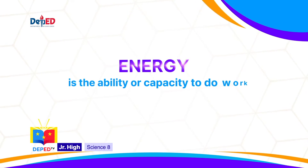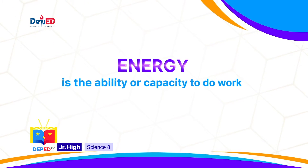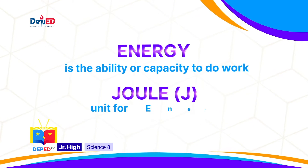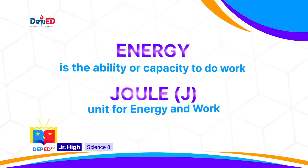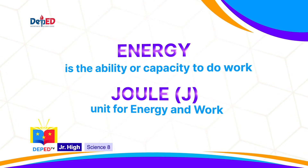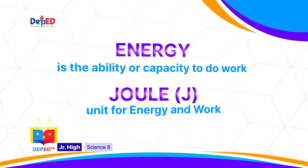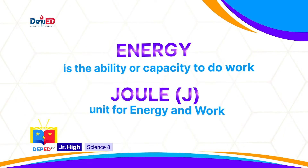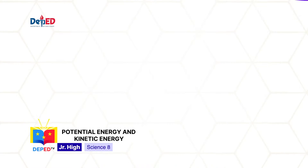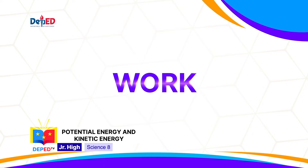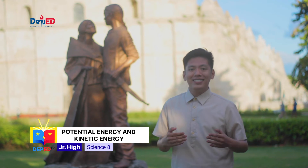This tells us that objects which are in motion have energy and can do work. Energy is the ability or capacity to do work. Its unit is the same as the unit of work, expressed in joules in the SI system. One joule of energy is needed to accomplish one joule of work, meaning the amount of energy in joules is equal to the amount of work done in joules.